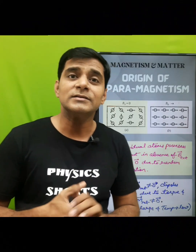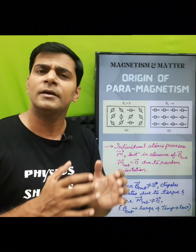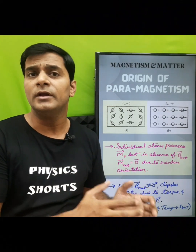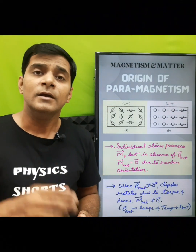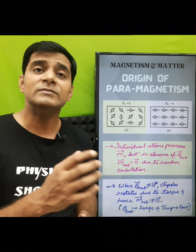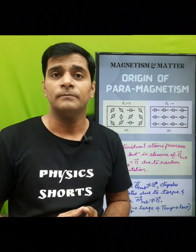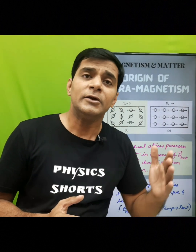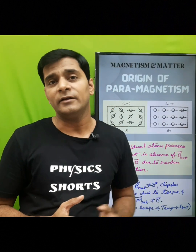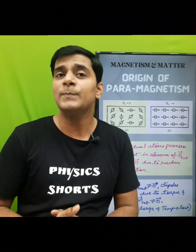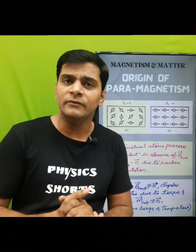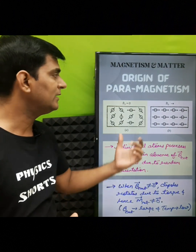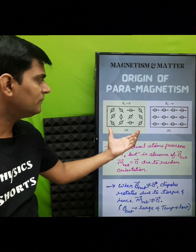For paramagnetic materials like aluminium, calcium, sodium etc., the paramagnetic properties show that they are slightly attracted towards the magnetic field. So what is the origin of this paramagnetism? We are going to understand this using these diagrams.